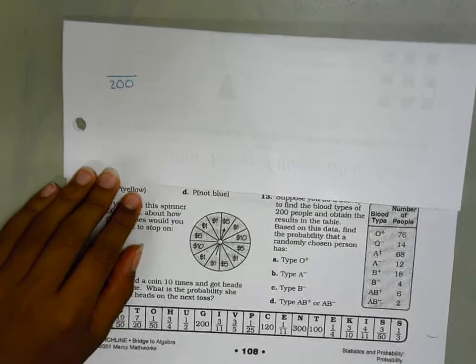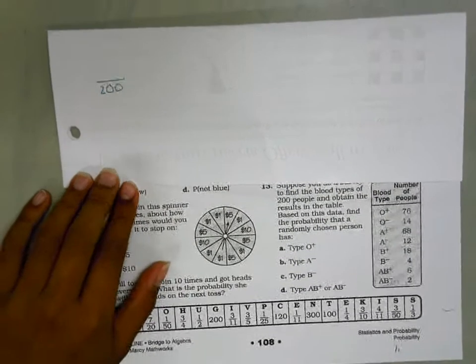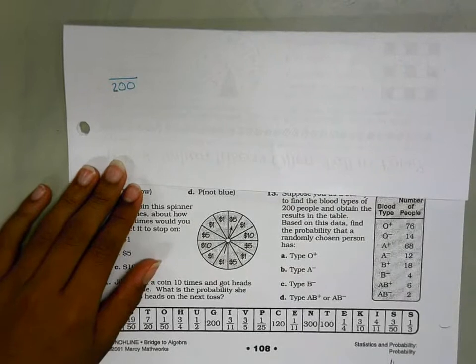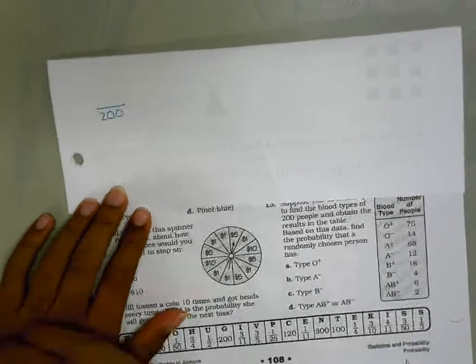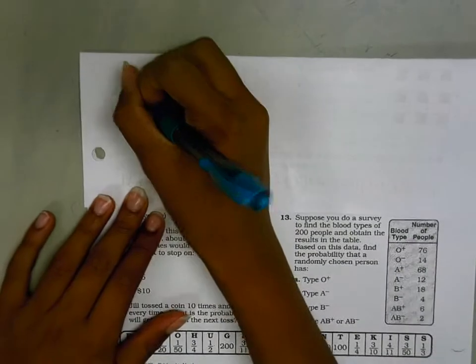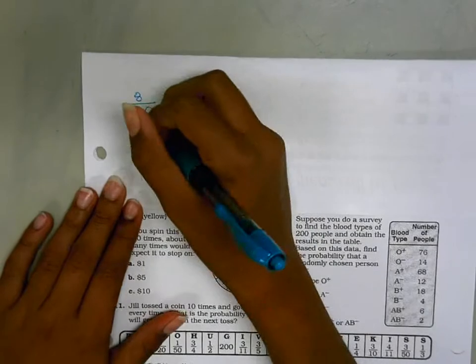Based on this data, find the probability that a randomly chosen person has type AB positive or AB negative. AB positive has 6 people and AB negative has 2. So I'll add them together to get 8 over 200. I'll use the ratio table.